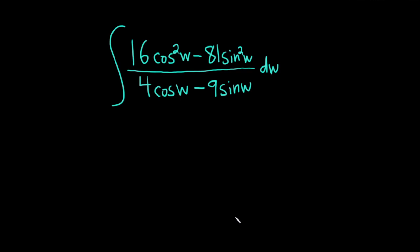Hi, in this problem we are going to try to integrate this. So we have 16 cosine squared w minus 81 sine squared w, all being divided by 4 cosine w minus 9 sine w.